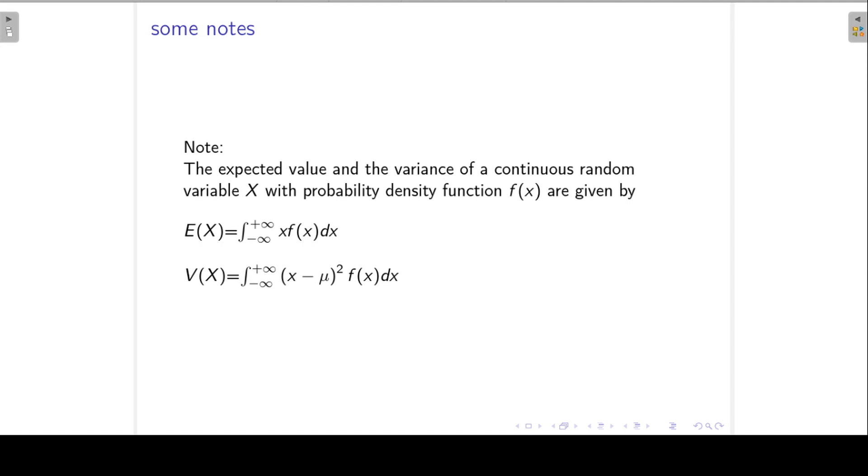And again, for those of you who are interested in calculus, we are not going to do this in any more detail. But we can also find the expected value and the variance of a continuous random variable. You remember that the expected value for a discrete random variable was given by the sum of x times probability distribution, and the variance was given by that formula.